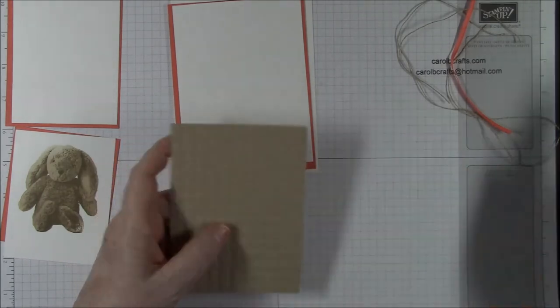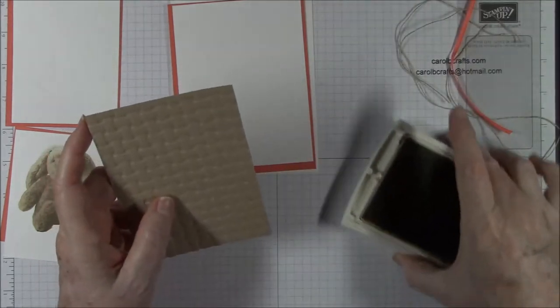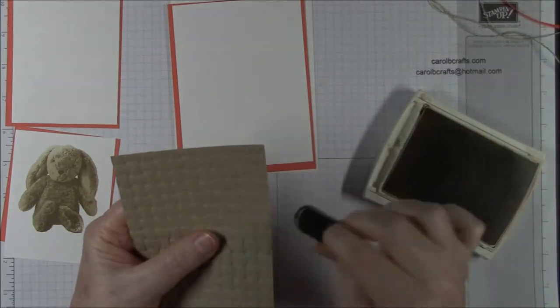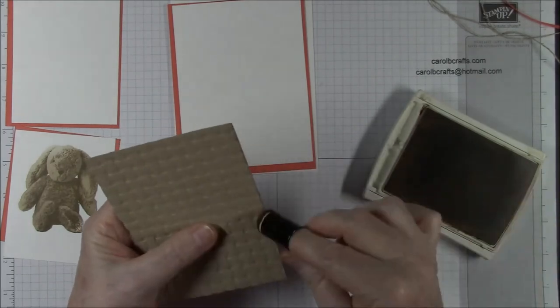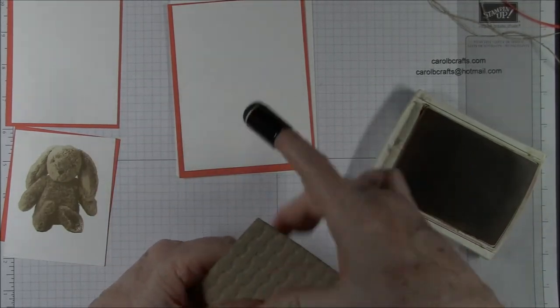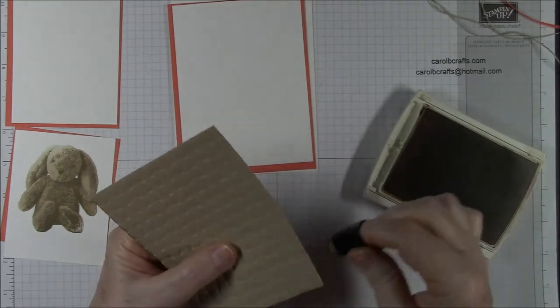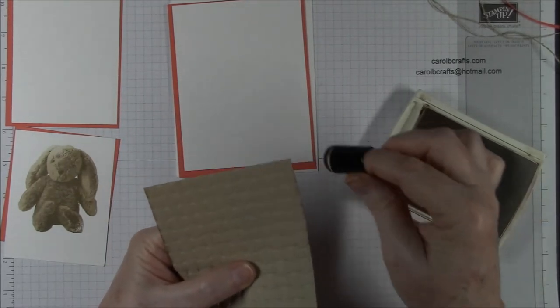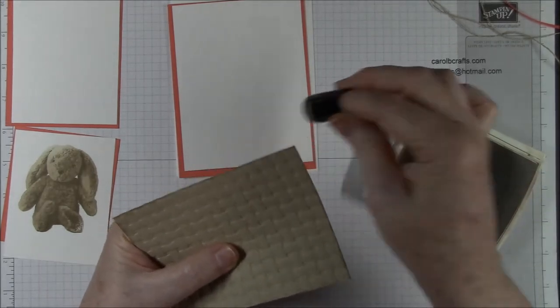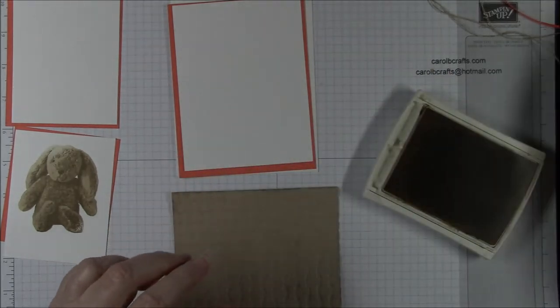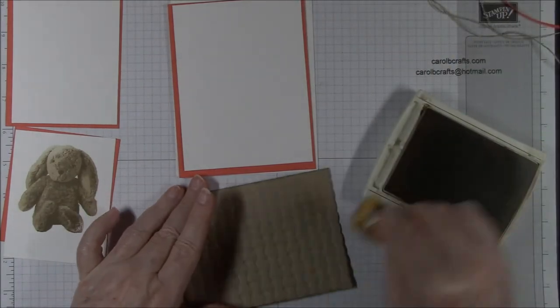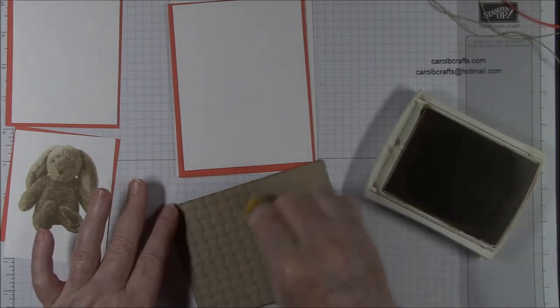Now I'm going to go ahead and use my Crumb Cake ink and get a little dauber with Crumb Cake ink on it, and just do the sides lightly, or you could do it a little heavier if you want, just to give it a little dimension. And then I'm going to take my sponge and I'm just going to lightly go over it, just a tiny bit. I don't want a lot.